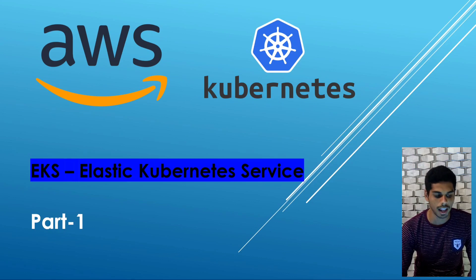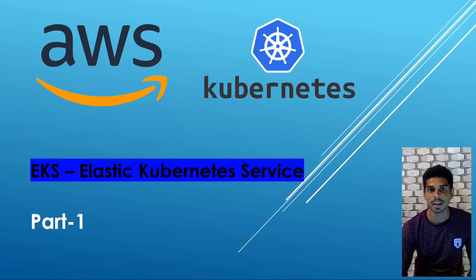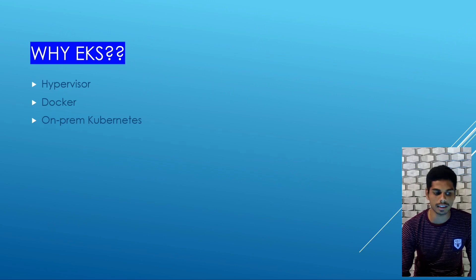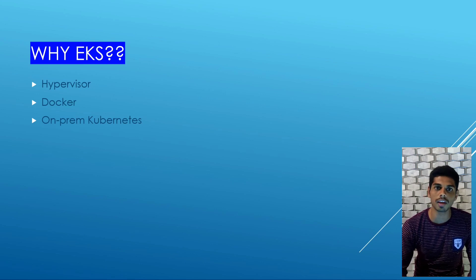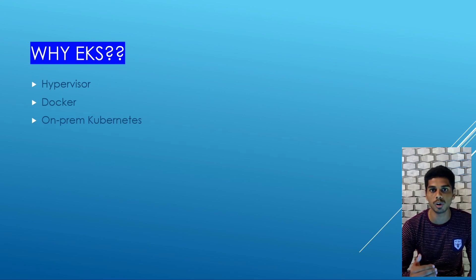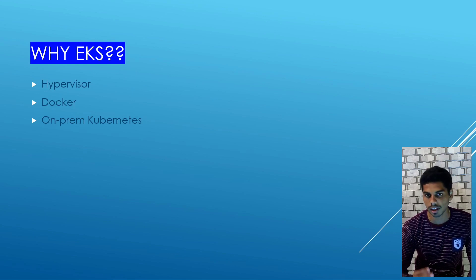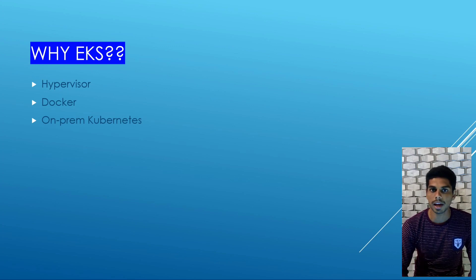Before starting, whatever you are seeing on the screen, there are two components which we are integrating — one is Amazon Web Service and another one is Kubernetes. AWS is providing a service called EKS. We are going to discuss EKS from the beginning. Before getting into EKS service, there are some pre-requirements everyone has to know: one is hypervisors, second is Docker, and third is on-premises Kubernetes.